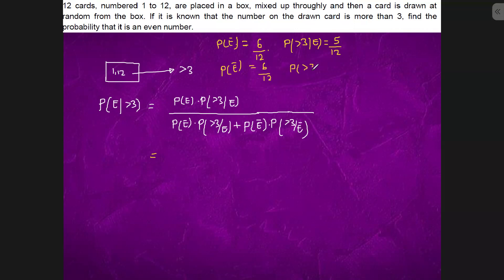Probability of drawing a card given it is not even, it is not even, so it will be 1, 3, 5, 7, 9, 11, which is 6 by 12. Probability of having even is 6 by 12. Probability of odd is 6 by 12.